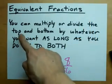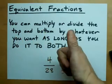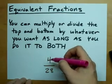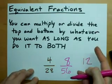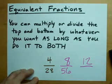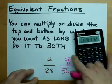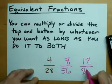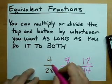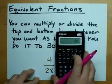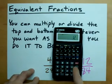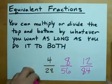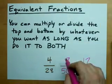As long as you did whatever you did to the top and the bottom, you're good to go. But if you want to multiply by 3 this time — if you multiply the top by 3, you've got to multiply the bottom by 3 as well. 28 times 3 turns out to be 84, so another fraction equivalent to this one is 12 over 84. Would you like proof? 12 divided by 84 is the exact same number we got before.